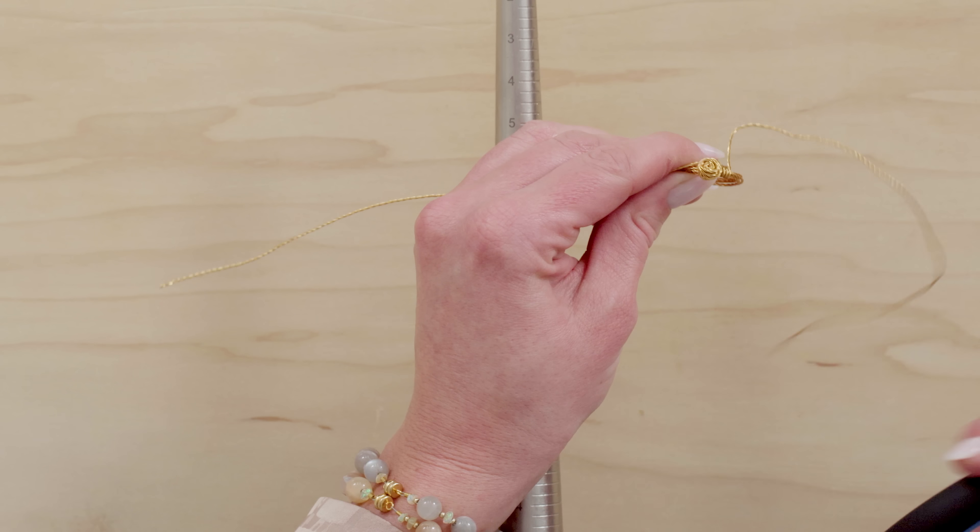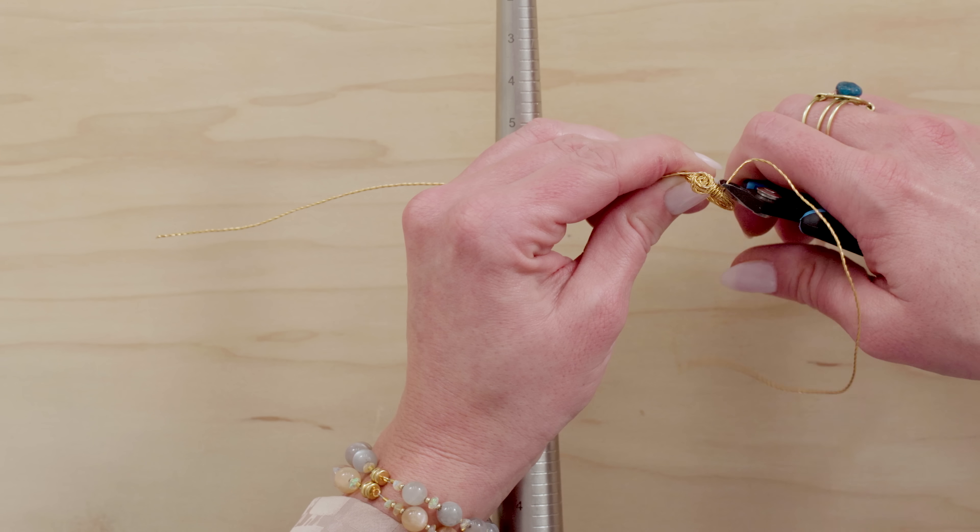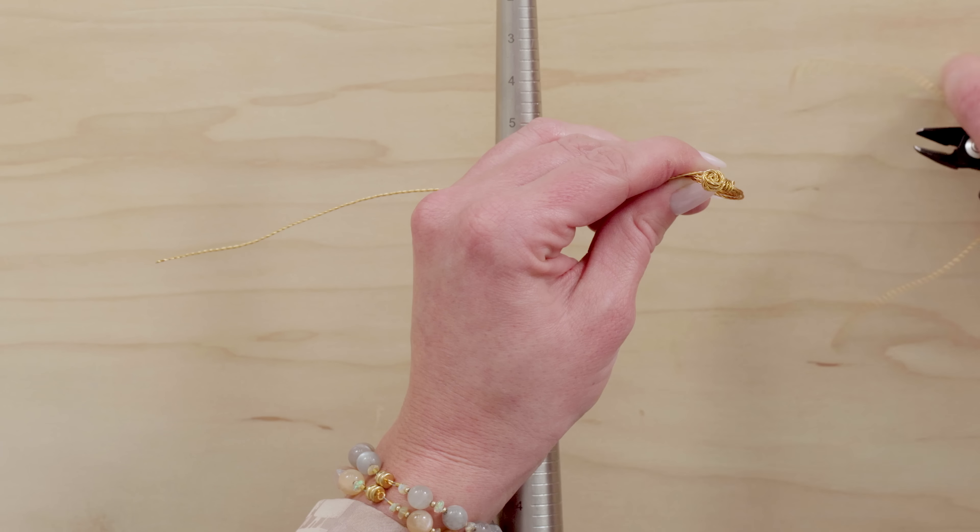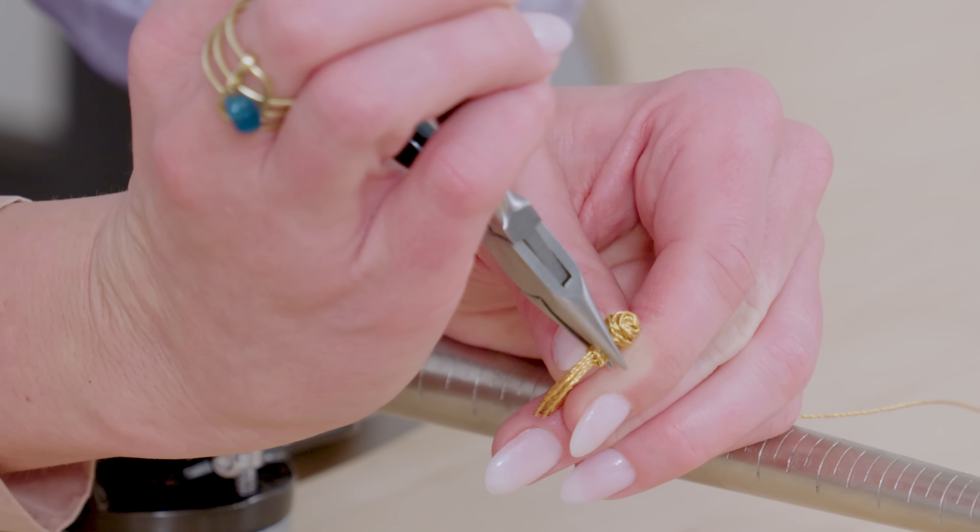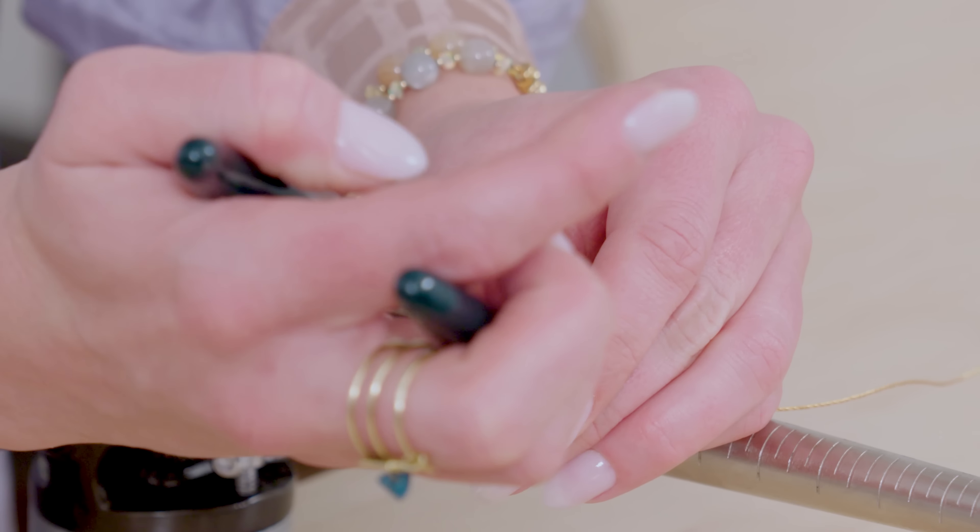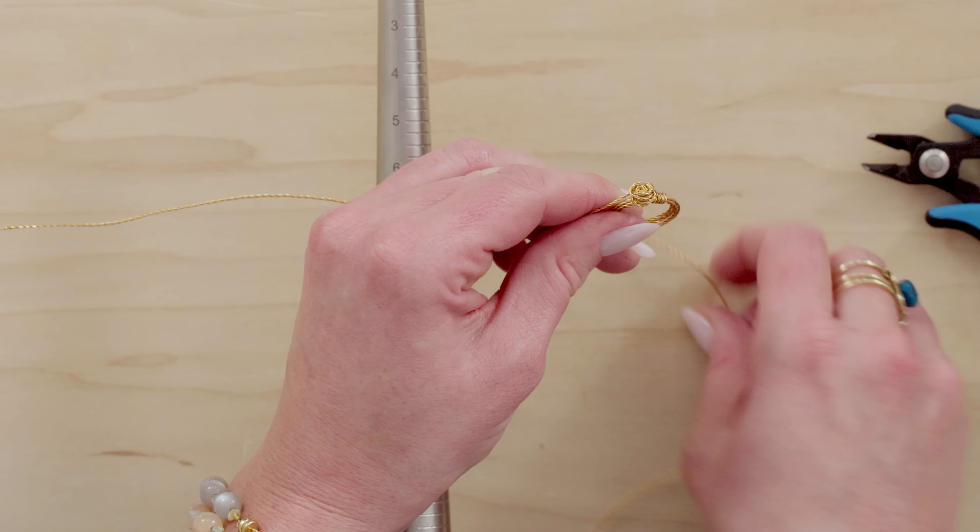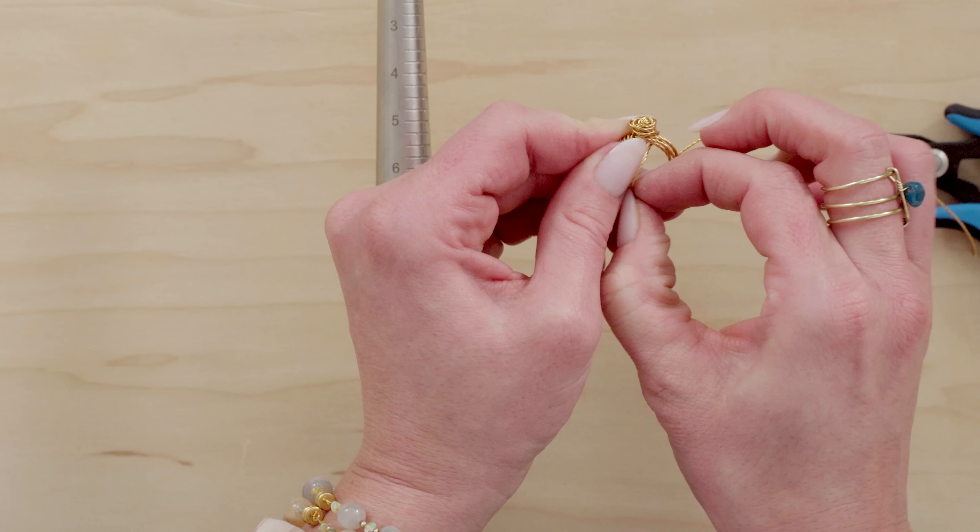And then I'm going to take the flat side of my flush cutter and trim that right on the side so that I can roll that little tail down into the band.